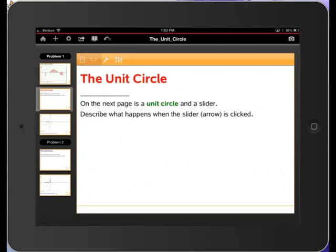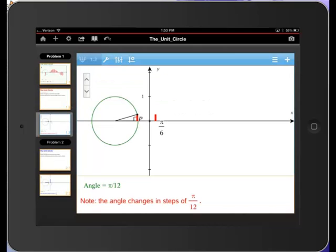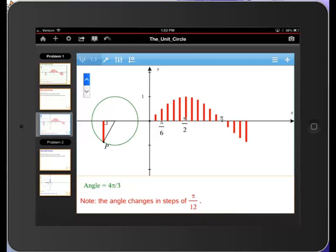Or we can have them investigate something more difficult like the unit circle. Touch the slider arrow. This is something that used to take very long in my math class. Many minutes for me to create this on the board. The student can now see the correlation between the unit circle and the graph of the sine function, individually, at his or her own pace.